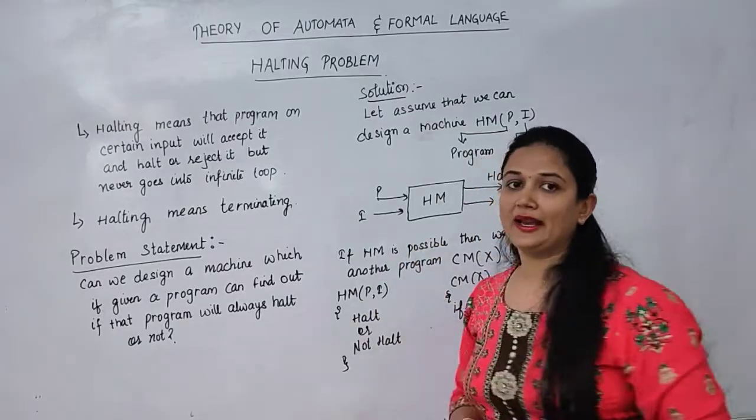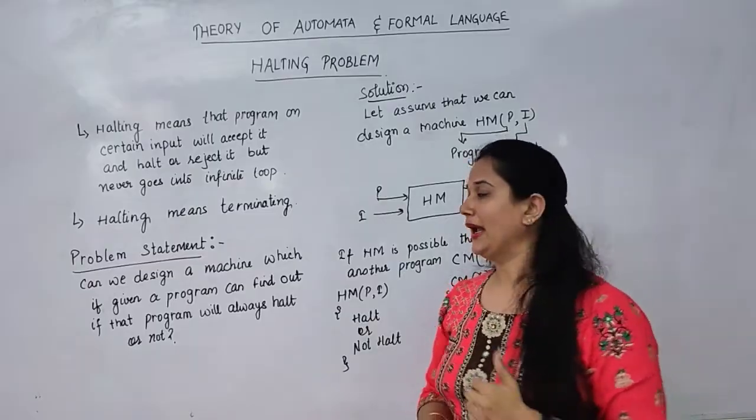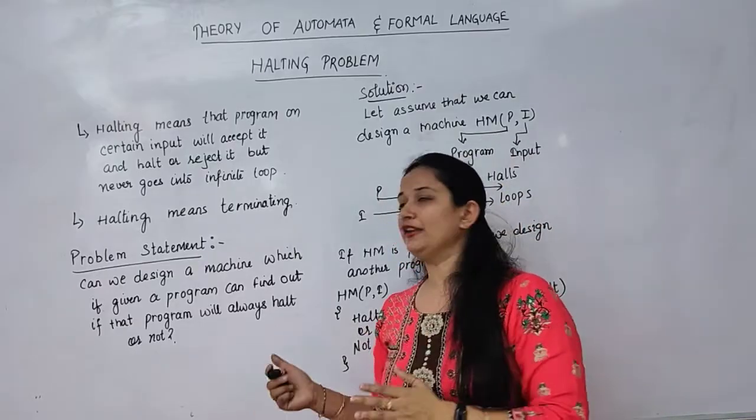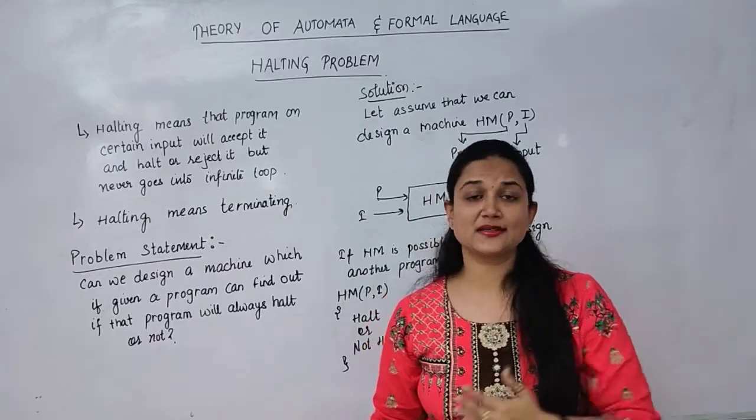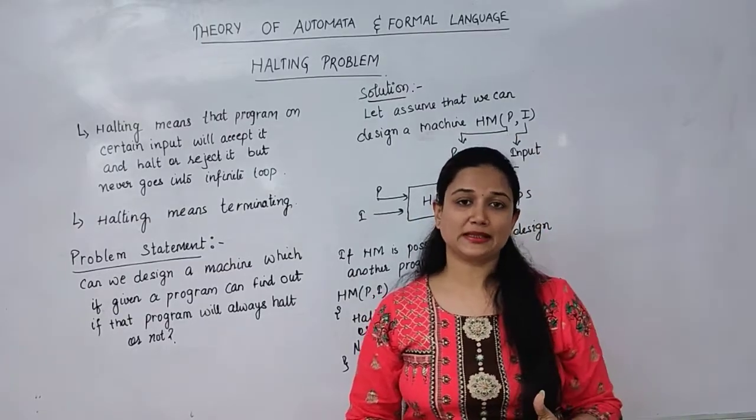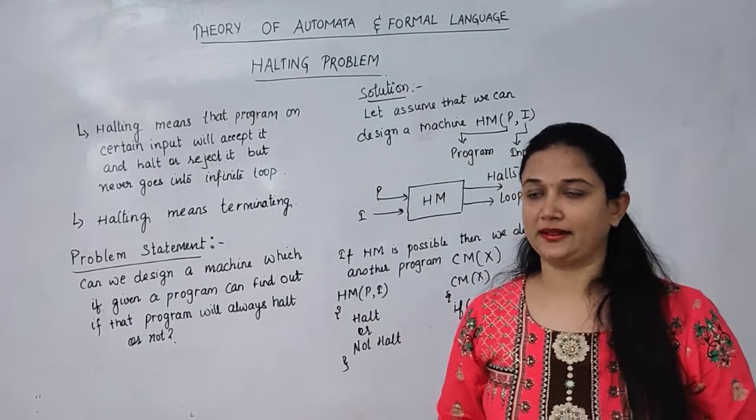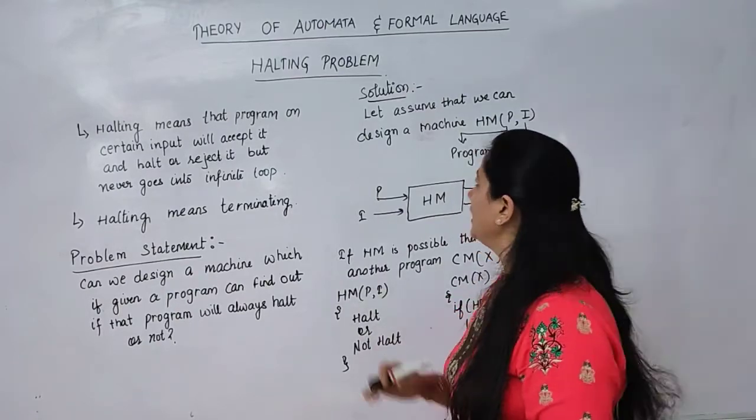So we prove this by a contradictory method. And as we know contradiction means I first take its negative, that yes such a machine can exist and we can build it. But we have to prove in the last that we cannot build such a machine. So let's see how we are proving it.